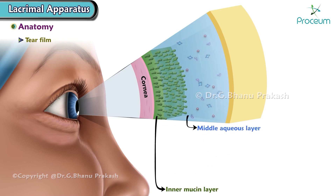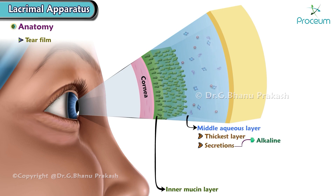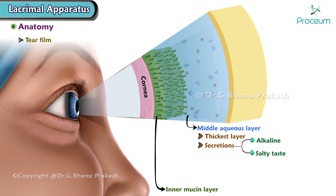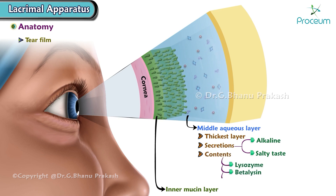2. Middle aqueous layer — it is the thickest layer. Secretions of this layer have an alkaline and salty taste. The aqueous layer contains lysozyme, beta-lysin, and lactoferrin.